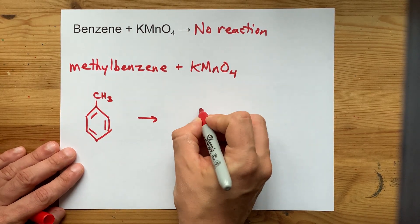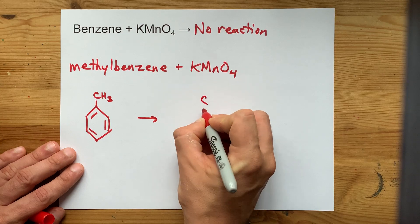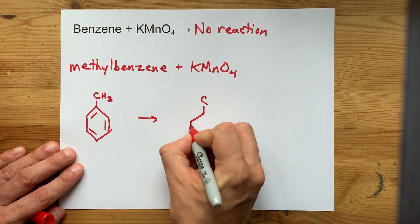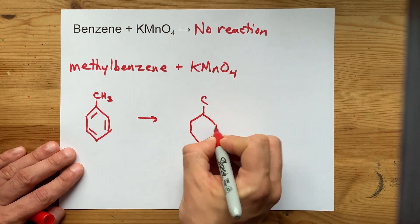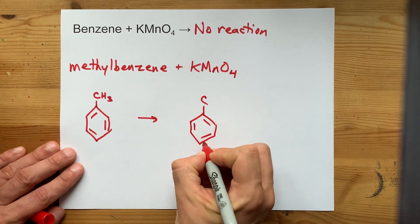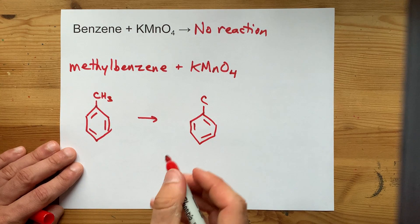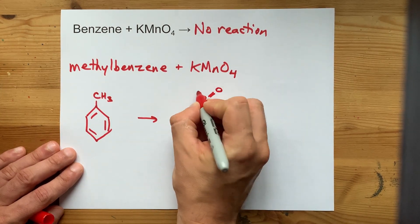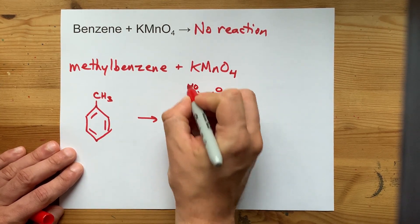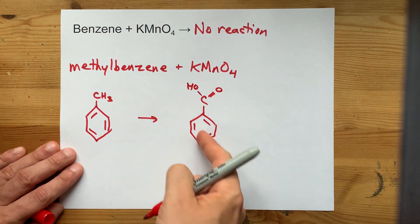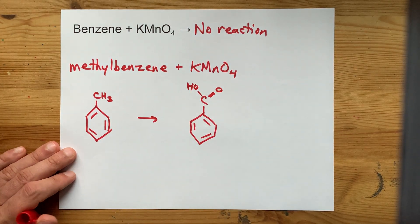What you end up with is the same carbon chain, the methyl along with the benzene that it's attached to. And then instead of the hydrogens, after all we are going to oxidize them, you'll end up with a carboxylic acid group or benzoic acid out of that.